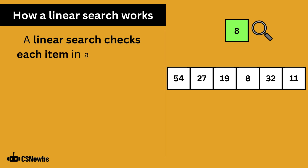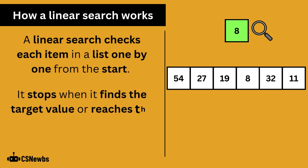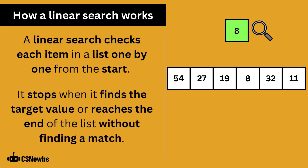A linear search checks each item in a list one by one from the start. It stops when it finds the target value or reaches the end of the list without finding a match.